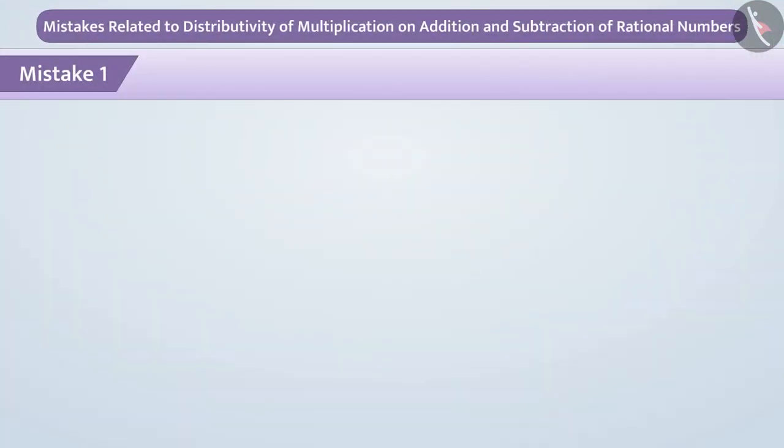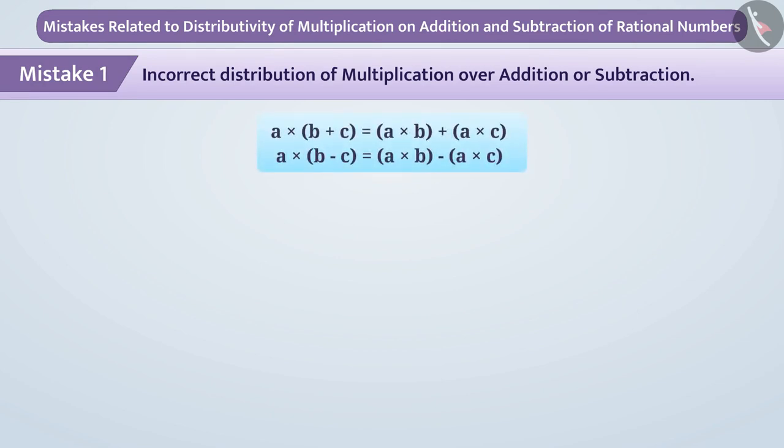Mistake 1: Incorrect distribution of multiplication over addition or subtraction. Some children often make mistakes while distributing multiplication over addition or subtraction. This is more commonly seen in algebra.